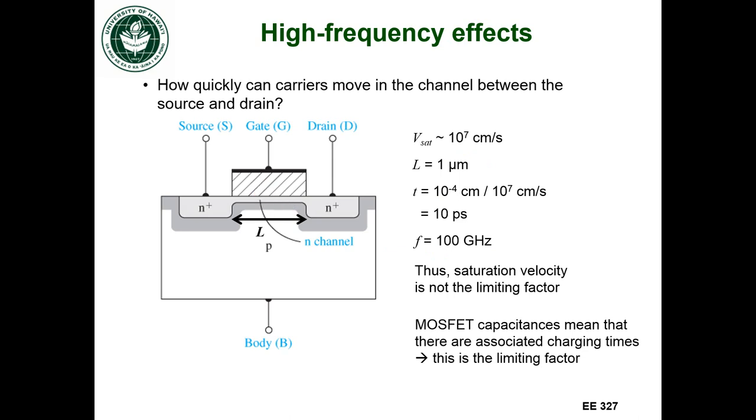capacitances that are internal to the MOSFET—that we looked at in order to develop the small signal equivalent circuit—have associated charging times, and those charging times create the limiting factor in how fast the MOSFET can switch.